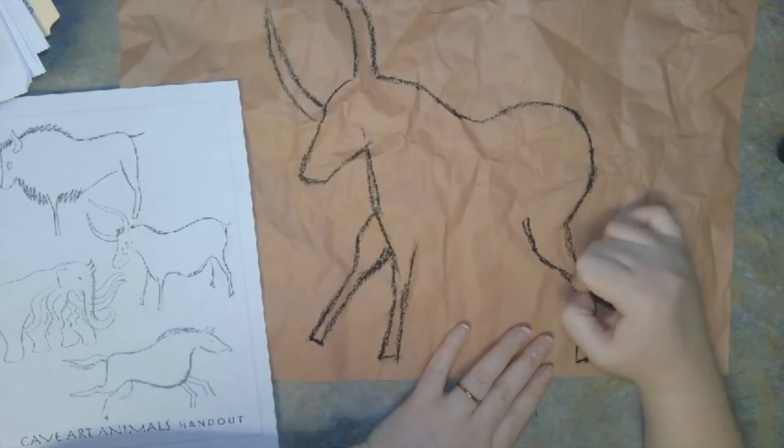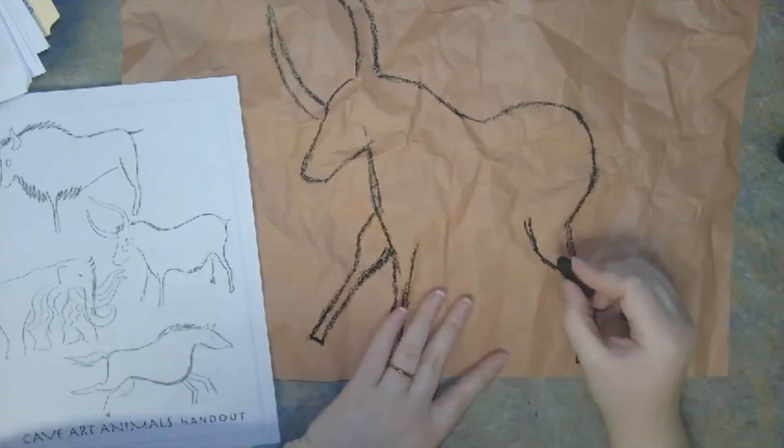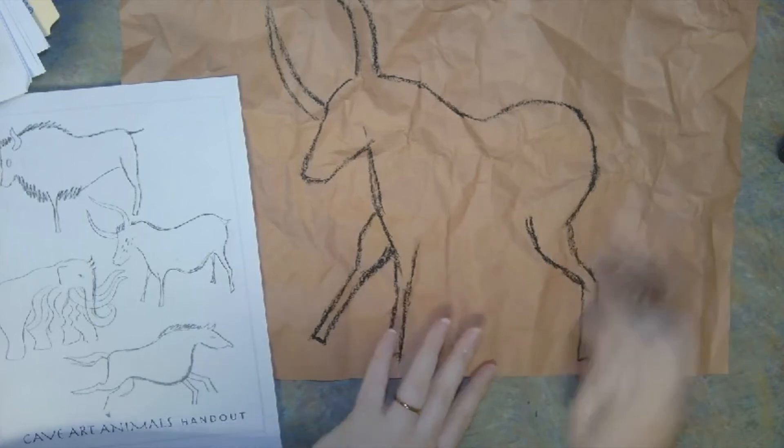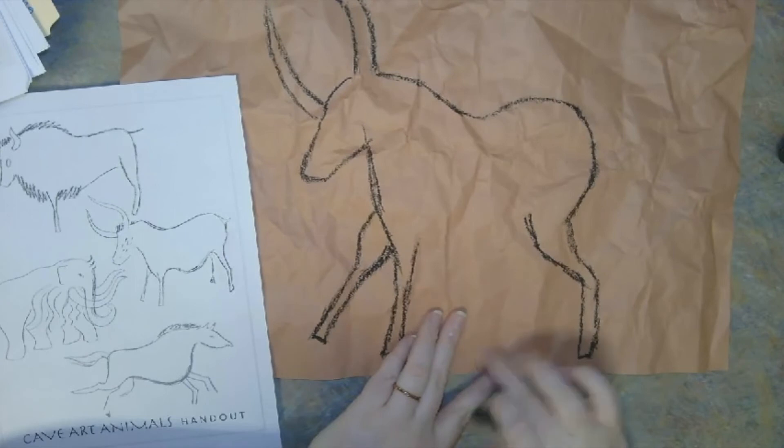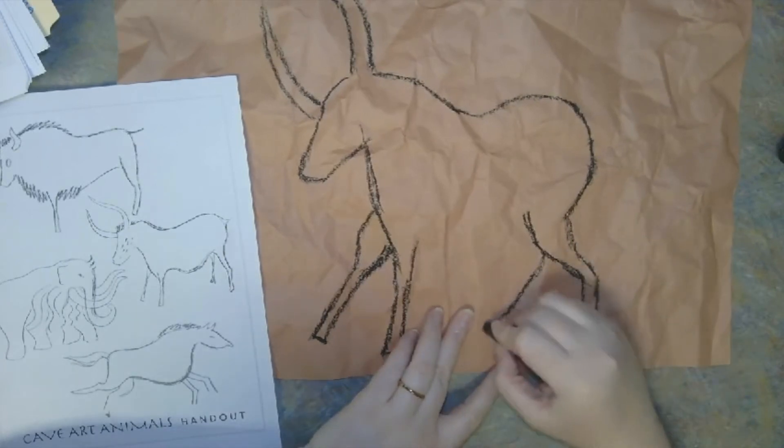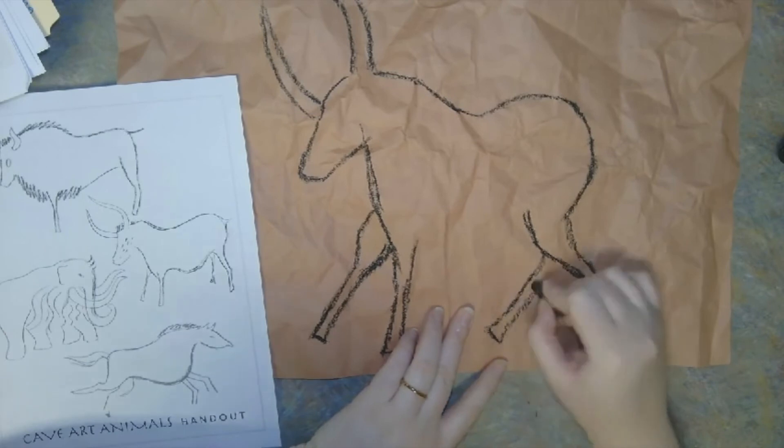Next we're going to start the back leg that is furthest away from us. This leg is going to come out from behind the first leg and comes straight out.